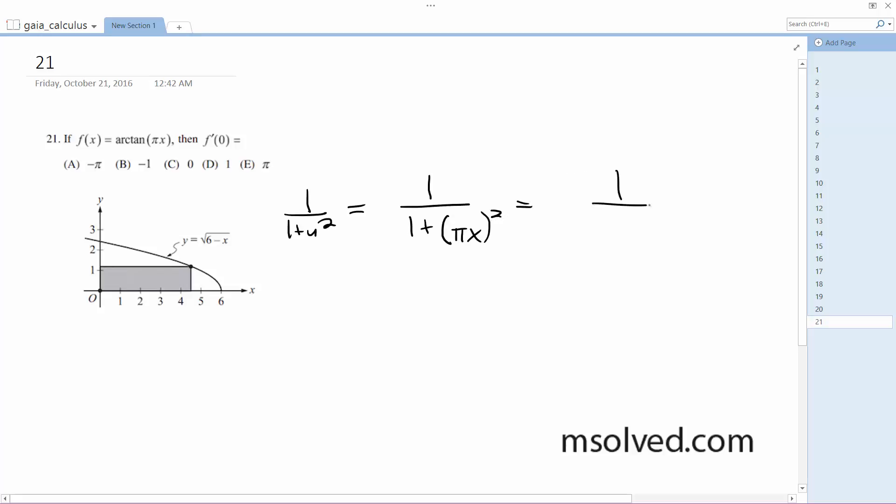So this becomes 1 over 1 plus pi squared x squared. And then you take the derivative of what that stuff's inside up here, pi x.